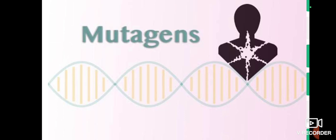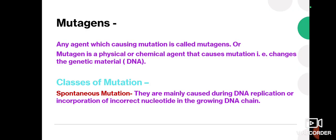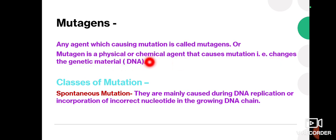The definition of mutagens: mutagens are any agent which causes mutation. In other words, a mutagen is a physical or chemical agent that causes mutation — that is, changes in genetic material, which is DNA. Mutagens include physical, chemical, or biological agents which are responsible for changes in the structure of DNA or the genetic material.